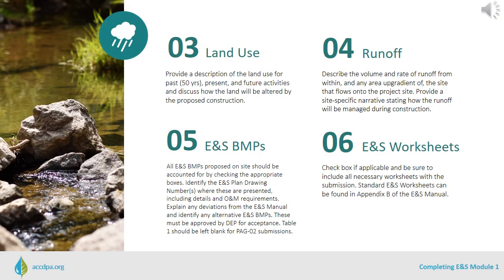Under Item 3, please provide a description of the land use for the past 50 years, present use, and future activities, and discuss how the land will be altered by the proposed construction. Item 4 discusses runoff. Use this section to describe the volume and rate of runoff, not only from within the site but also from the area up-gradient that flows onto the project. Provide a site-specific narrative stating how the runoff will be managed during the ENS phase.